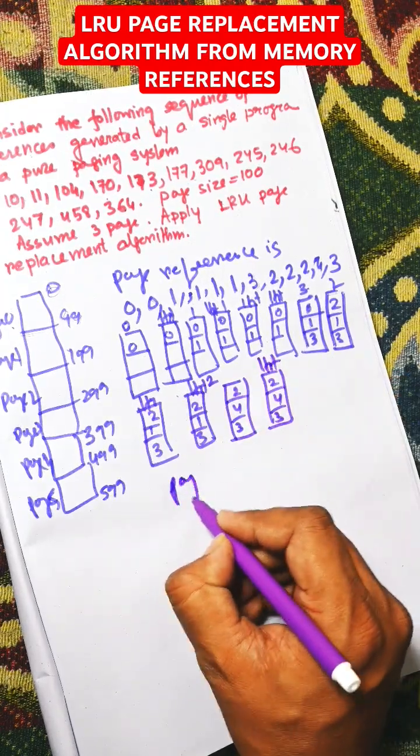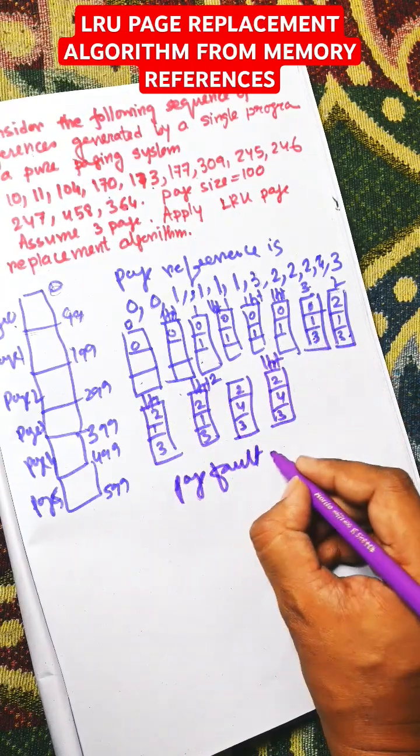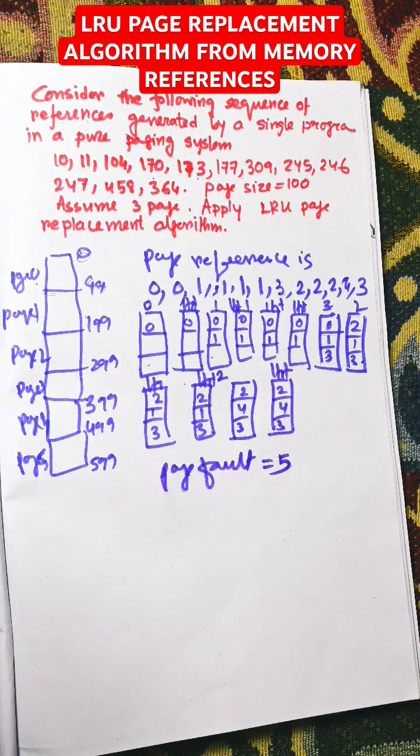So number of page faults equal to 5. This is LRU page replacement algorithm. Thank you very much for watching this video.